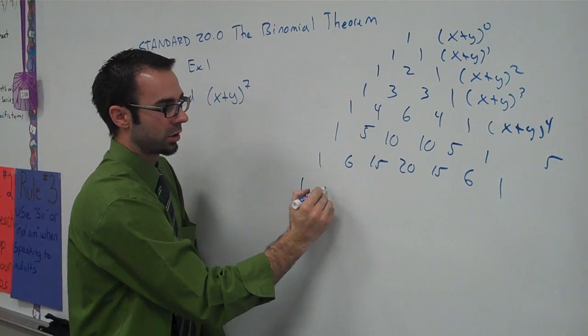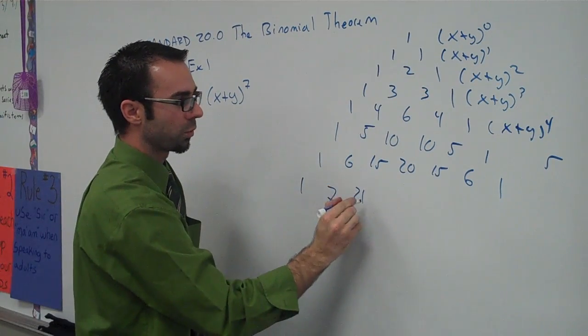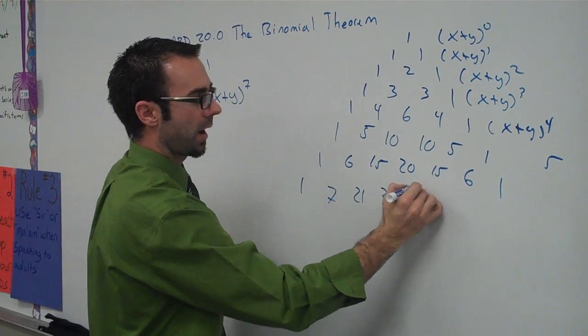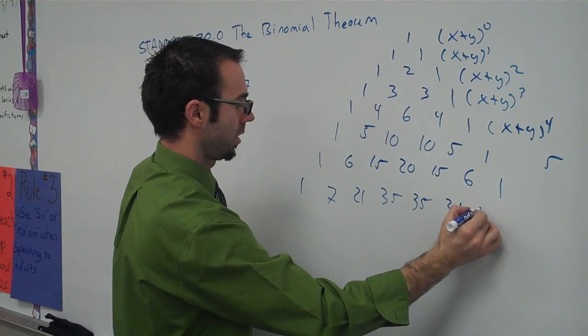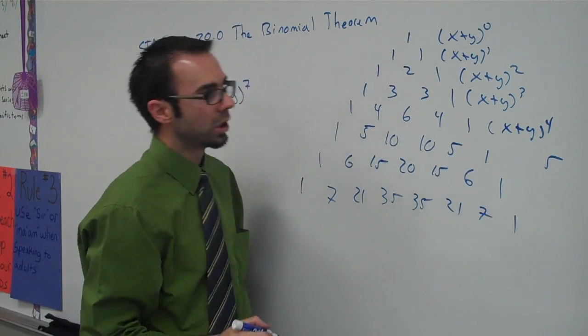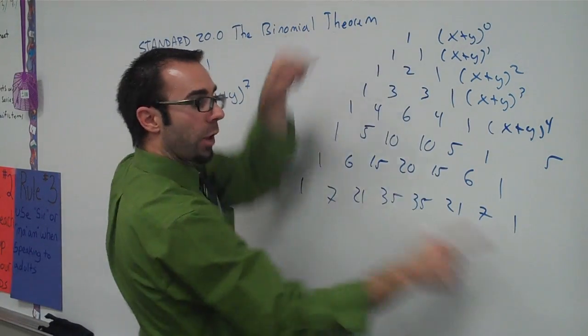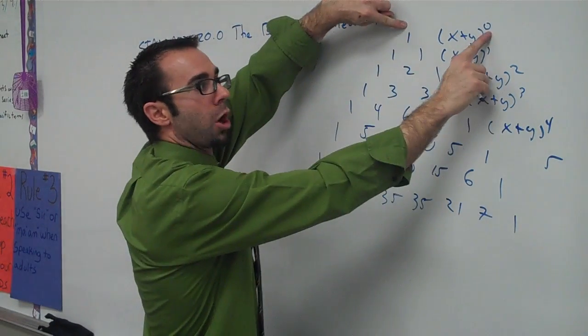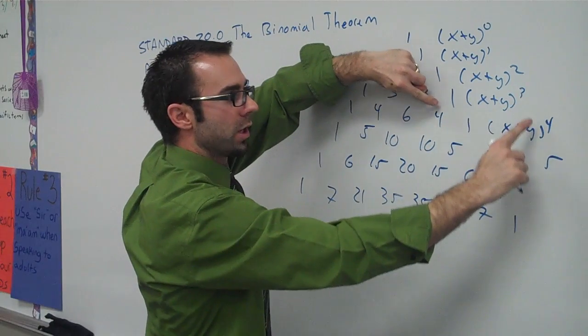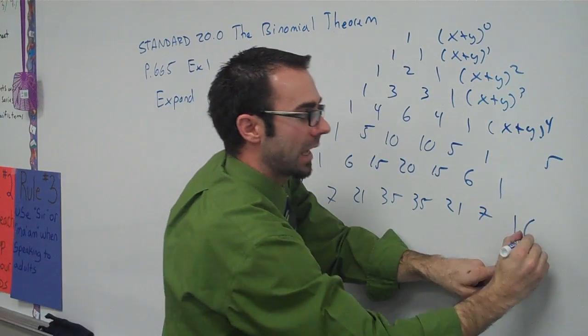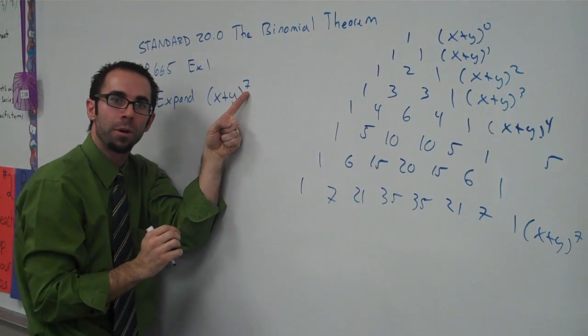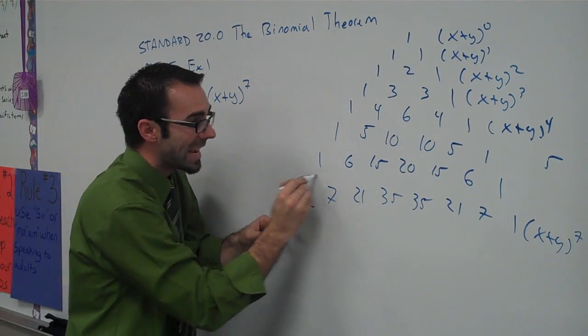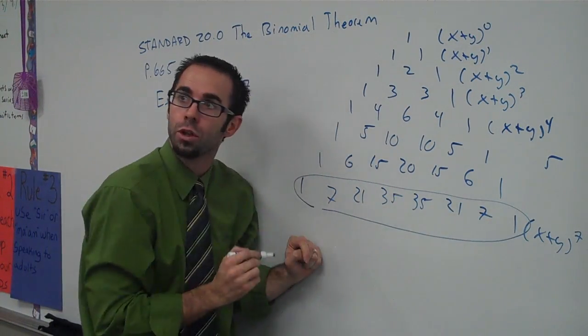So one, seven, twenty-one, thirty-five, thirty-five, twenty-one, seven, and one. How do I know which row to use? It's because you start with zero, one, two, three, four, five, six, seven. This stands for the coefficient of x to the power of seven. So we're going to use these coefficients, those coefficients right there.